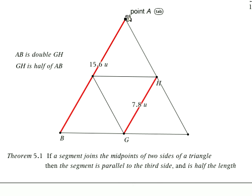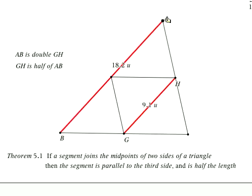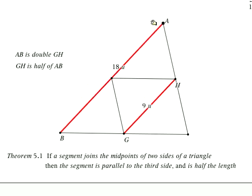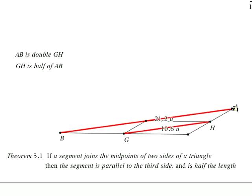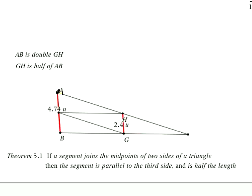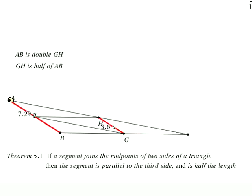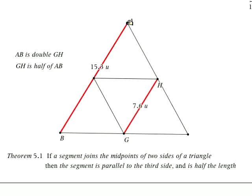So segment AB, this entire big segment, is going to be double this segment from G to H. And consequently, GH is half of AB. So as I move this around, you can see how these numbers are changing, and it doesn't matter if our triangle is right, equilateral, scalene, or obtuse. This holds up for all kinds of triangles.